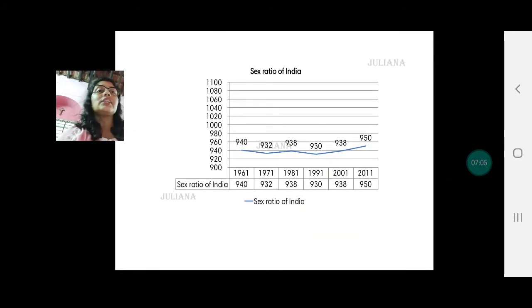What about the sex ratio of India? It's quite opposite to what we just saw in Brazil. In India in 1961 there were only 940 females for every thousand males. In 1971 it reduced to 932 females. In 1981 it became 938 females per thousand males. In 1991 it came down to 930 females. In 2001 it went up slightly to 938, and in 2011 it is 950 females per thousand males. So nowhere in India has female ratio ever been more than males, which is a matter of concern.